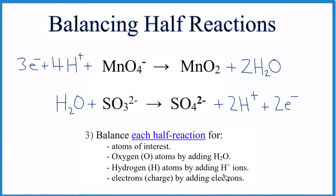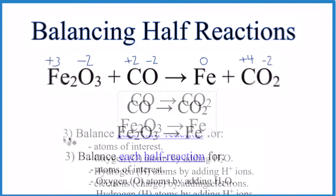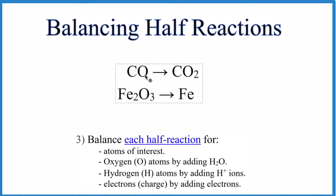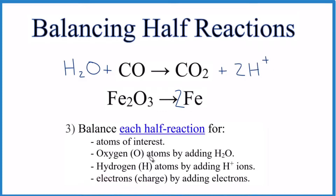Let's try another one. Here's the original redox equation and the half reactions — pause and give this a try. Balance atoms of interest first: carbon to carbon — good. Two irons, so put a coefficient of two. For oxygen atoms, we have one here and two there, so add one water molecule; now one plus one equals two oxygens on each side. Two hydrogens, so add two H+ ions. For the charge, we have two plus on one side and neutral on the other, so add two electrons. That's the balanced half reaction.